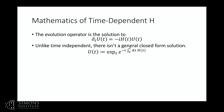If you've got a time-dependent Hamiltonian, the time evolution operator is the solution to an operator differential equation. Normally the solution would be a matrix exponential e to the minus iHt, but if H is a function of time, there isn't a closed-form expression in general for this.